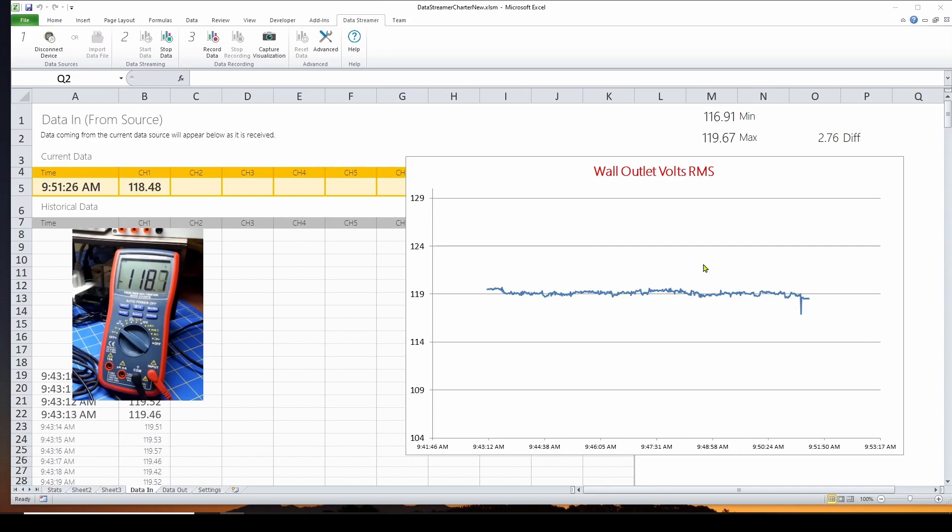And it's giving us one second updates and it's automatically plotting. You can see we had a dip in voltage. This is the RMS from the wall outlet. And you can also see over here where we've got the actual reading in RMS from a multimeter connected to the wall outlet. And you can see that that is pretty well in agreement. It's about 118. They both agree, give or take, you know, a few tenths of a volt.